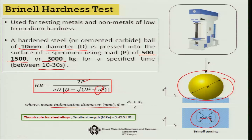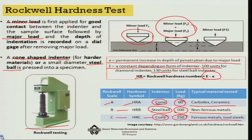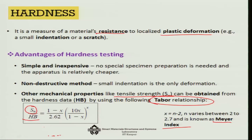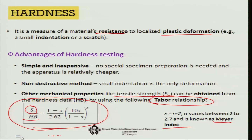There is a thumb rule that the tensile strength can be calculated directly as 3.45 times HB, which is usually used for steel alloys. A more generalized relationship is also used for finding the strength of various types of materials, making it not very material-specific.